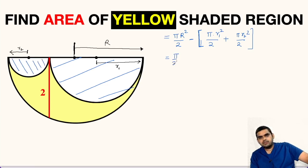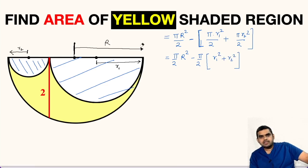Let us simplify this. This will be π/2 times R squared, minus — we can take out π/2 as common from both terms — giving us π/2 times (r1 squared plus r2 squared).